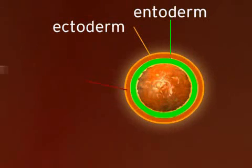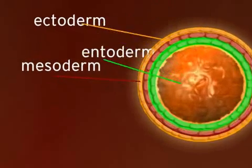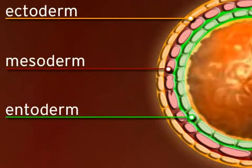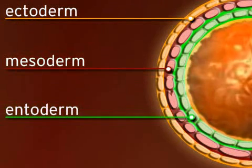A third network of cells forms from the ectoderm, and is called the mesoderm. So at the beginning, the clump of cells consists of the ectoderm, the mesoderm, and the entoderm.